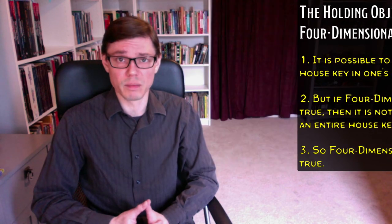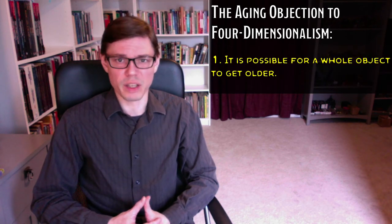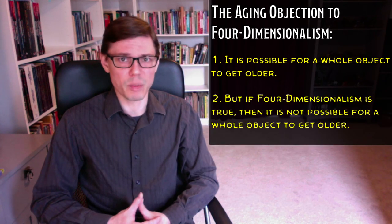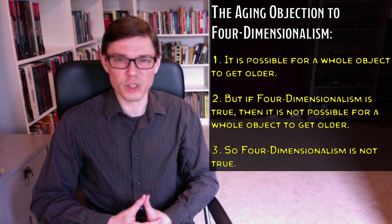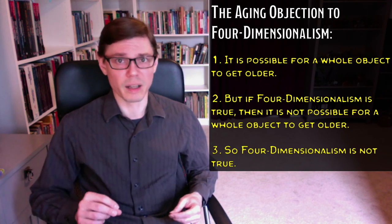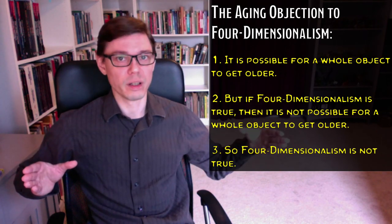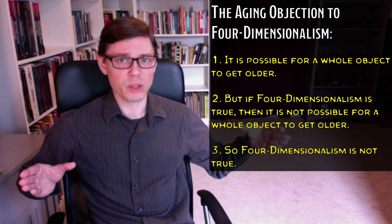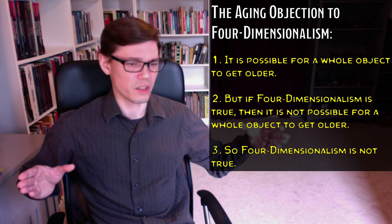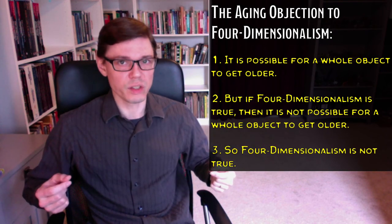In addition to this, there's also what we might call the aging objection, which goes something like this: it's possible for a whole object to get older. If four-dimensionalism is true, no entire object can get older. So four-dimensionalism is not true. My dog is getting older — that seems to be true, and not just part of my dog, but my dog, all of my dog, is getting older. Yet according to four-dimensionalism, my whole dog is stretched out across time, fixed there for all of its history in perpetuity, and that thing does not get older. Nothing happens to my dog in that sense. My dog just has all of these stages distributed across history, and always they will be so distributed, and always they were so distributed. It does not age, it does not change — it just sticks there in a static space-time continuum. And so for everything: nothing truly ages according to four-dimensionalism.